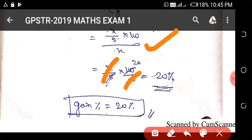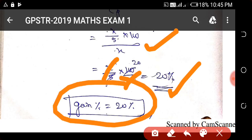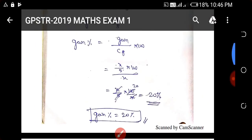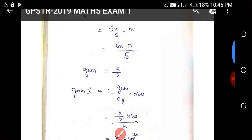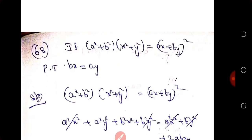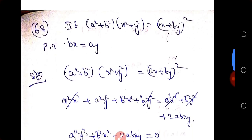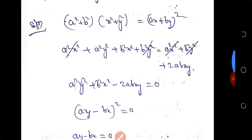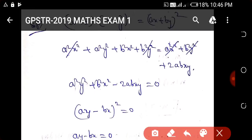Using the gain percentage formula — gain by CP into 100 — we can compute the result. The next problem states: if x squared plus y squared equals (ax plus by) whole squared, prove that bx equals ay.